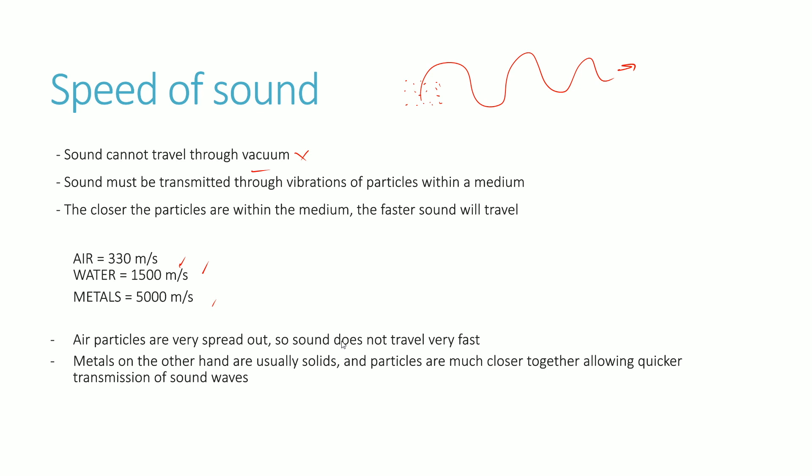The closer the particles are together within a medium, the faster sound will travel as a result of the proximity of the particles within that medium. That's why you see that as you go from air to water to metal, the speed of sound goes higher and higher and higher. You can imagine air particles as a gas, they're very spread out and so sound has a bit more trouble being transmitted through air or gas in general, compared to water where the particles are more closer together, and of course in metals where particles are extremely close together allowing quicker more efficient transmission of sound waves.